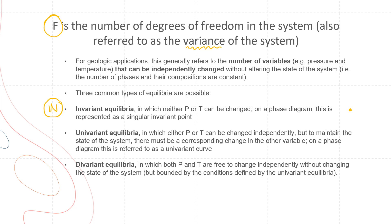The second is univariant equilibria, in which either pressure or temperature can be changed independently. But to maintain the state of the system, there has to be a corresponding change in the other variable — so if you're changing pressure, there will have to be a change in temperature. On a phase diagram, this is referred to as a univariant curve.